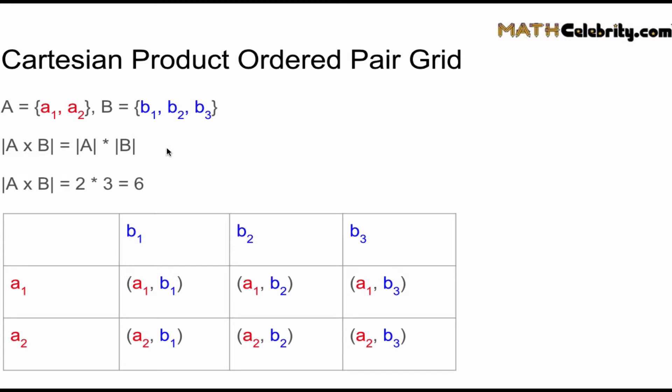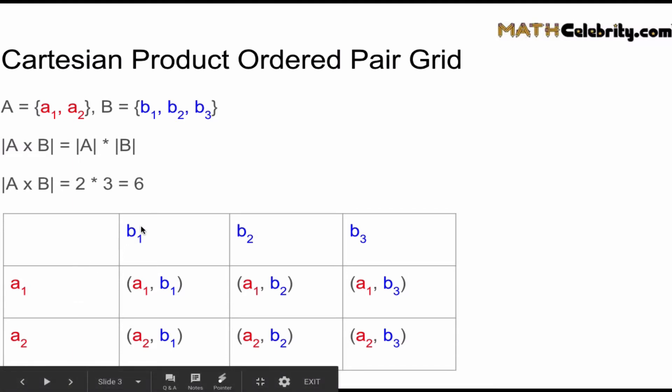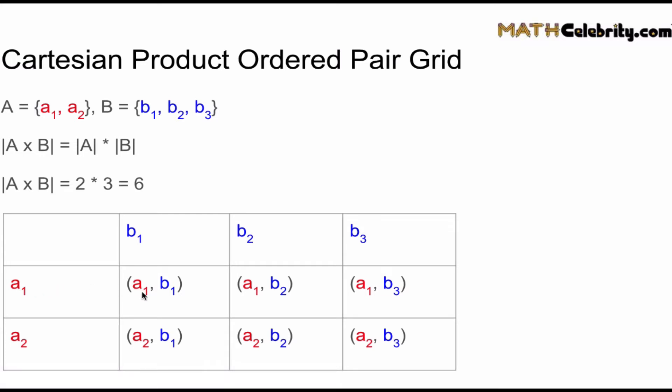If we build this grid—and I highly recommend this grid—when you set up the elements, take your first set and set them up vertically, take your second set B and set them up horizontally, and then you just pull over this element to this element and build all your ordered pairs. It's a nice detailed grid for you to build and understand the Cartesian product.